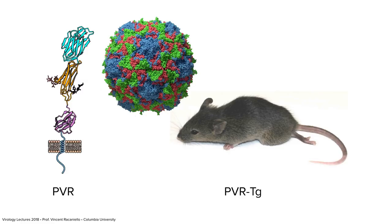Mouse cells are permissive for polio but not susceptible. Kathy cloned the poliovirus receptor, put it in mouse cells, and they got infected. A subsequent student, Rebao Ren, then made transgenic mice producing the human poliovirus receptor gene. These animals could be infected with polio — all you needed was the receptor. You can see this animal is paralyzed after being injected with poliovirus.